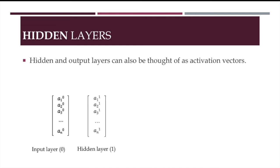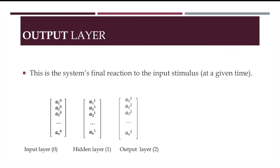Hidden and output layers can also be thought of as activation vectors. So here I've called the first hidden layer 1. So the top number is the activation for unit 1 in layer 1, etc.